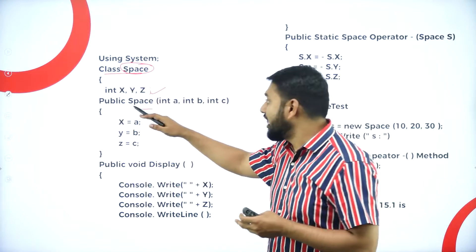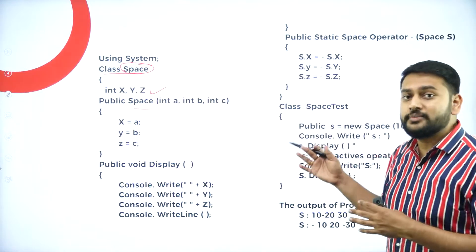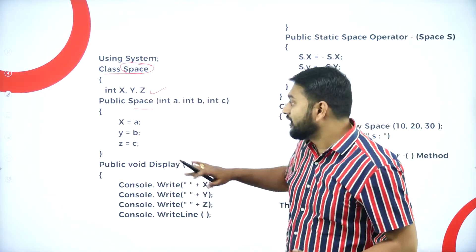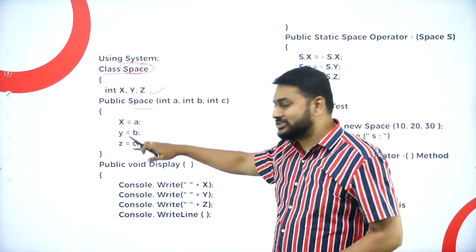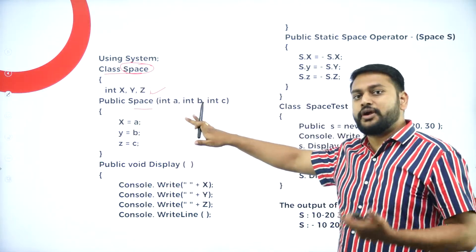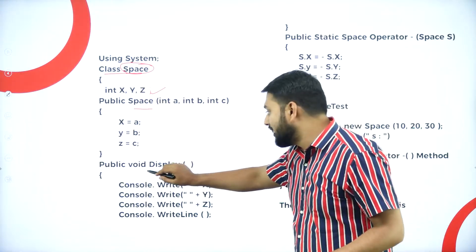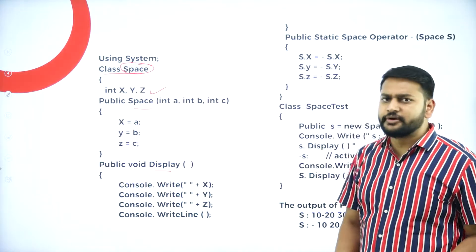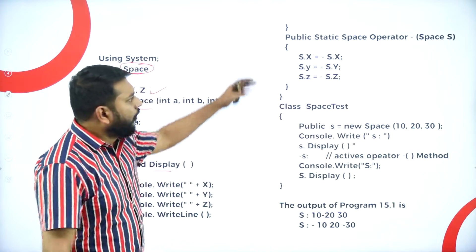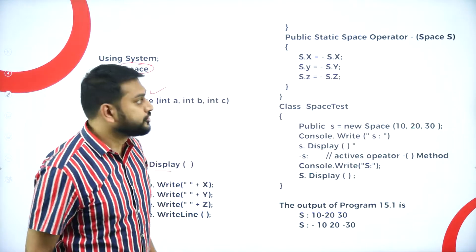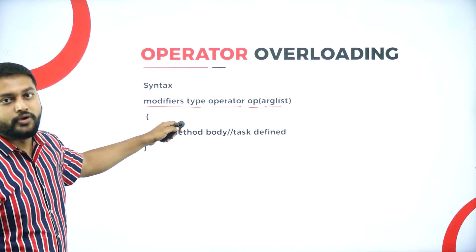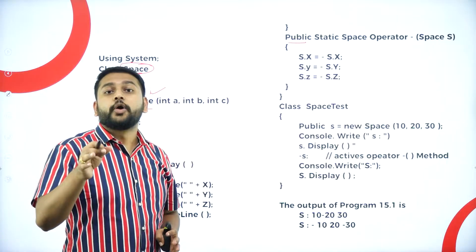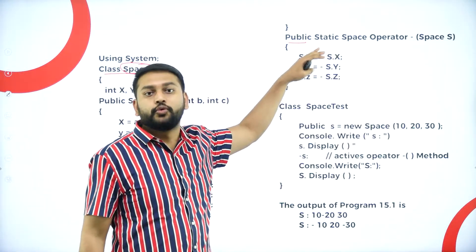Why do we use the constructor method? Automatically, whenever I create the object for this class, the values will get initialized. Moving forward, I have one more method — this is a normal method called 'display'. Whatever I have here, I will be printing it using console.write — printing x, y, z. Now observe here: this is where I have the method which overloads the operator. The modifier is 'public', and public static must be there if you are defining the operator overloading method. Without this keyword, you cannot have a method to overload an operator.